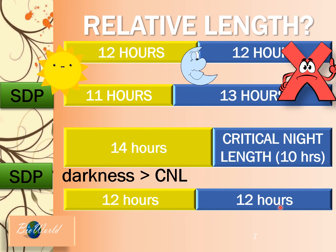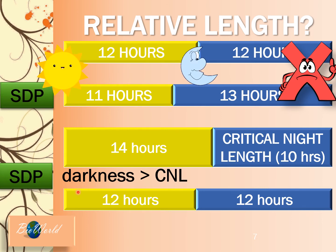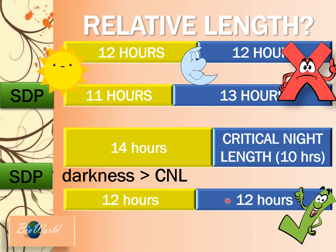Sometimes this is confusing for students because they see that 12 hours of darkness equals 12 hours of daylight, and they wonder how a short day plant can flower when the hours are equal. Remember the definition: a short day plant will flower when exposed to a relatively longer length of darkness — 'relative' here means longer than the critical night length. We think of the hours based on the plant's method, not the human method. Let's try to apply this for a long day plant.